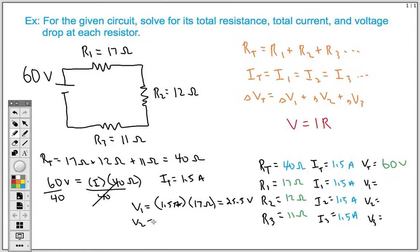For our second voltage drop, it's still the same, 1.5 Amps, multiplied now by our 12 Ohms. That's going to give us a voltage drop of 18 Volts. And then our last voltage drop, our third one here, is going to be 1.5 Amps times our 11 Ohm resistor, which gives us 16.5 Volts.